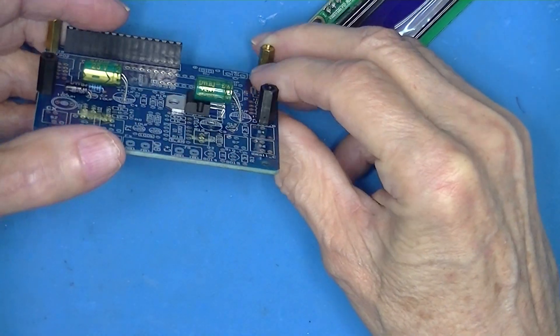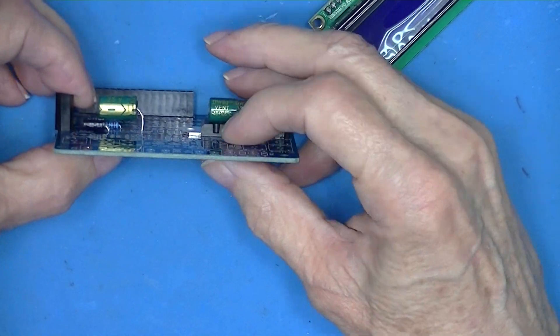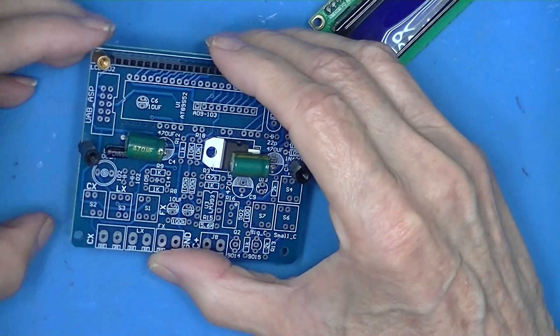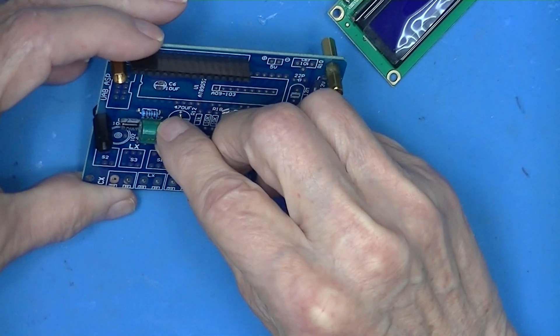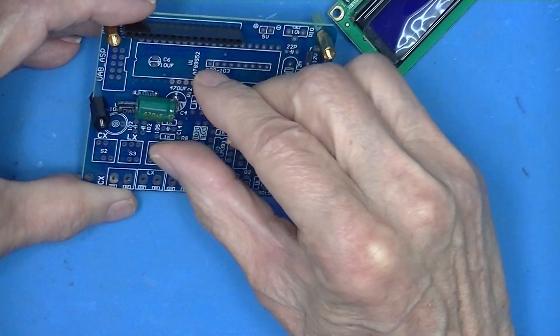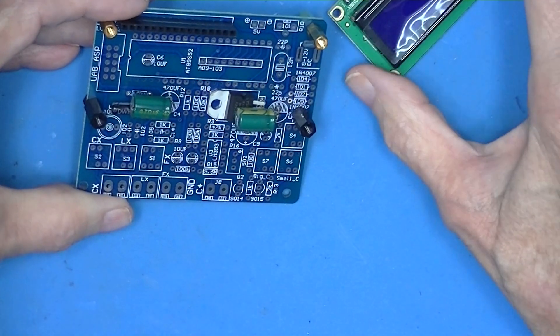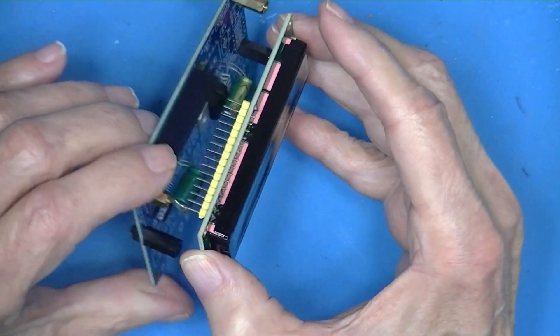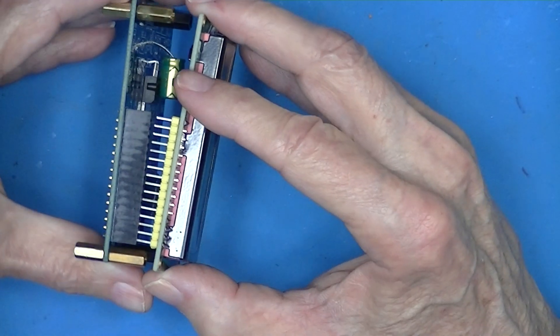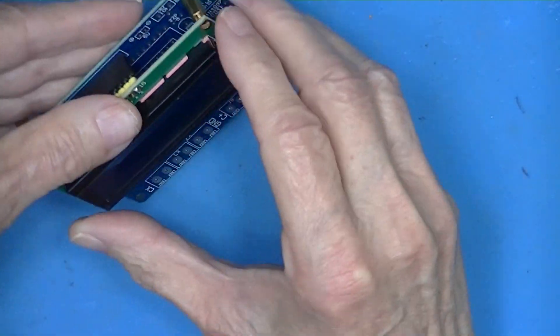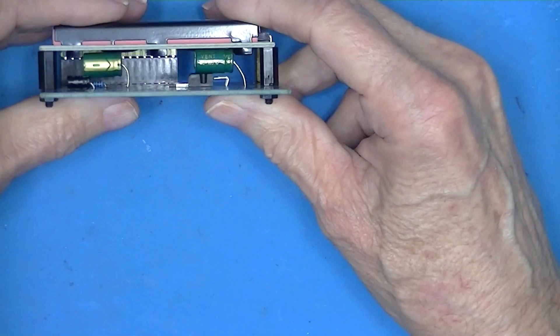Once these capacitors are installed and these underneath them, you may want to install this 2k resistor under here. You don't have to, you can fish it in there. Now, the display using the components furnished with the kit fits nicely.